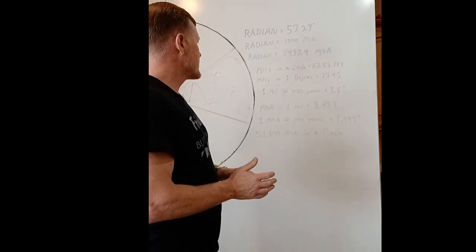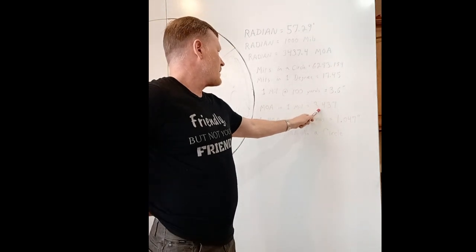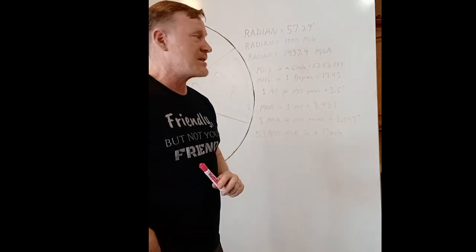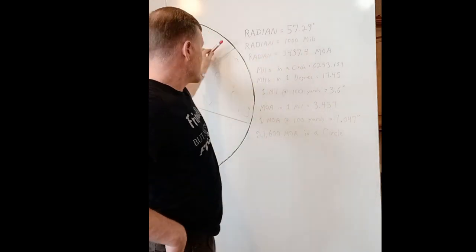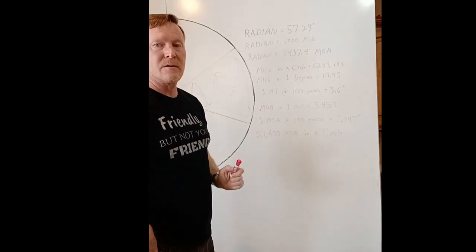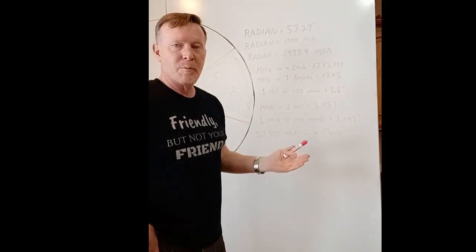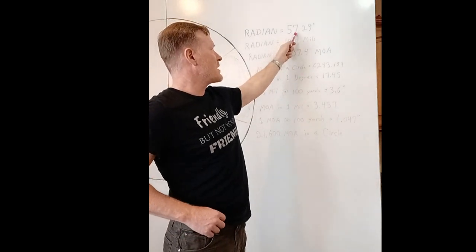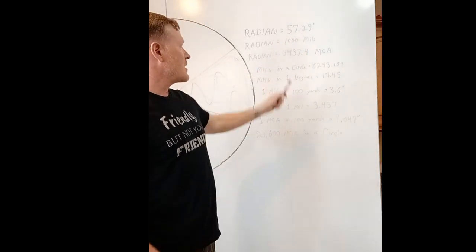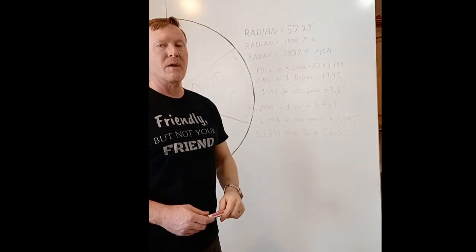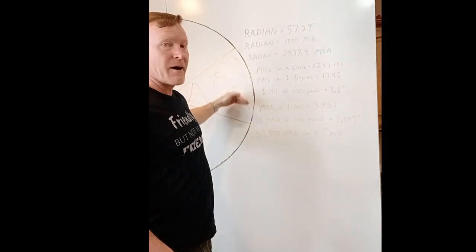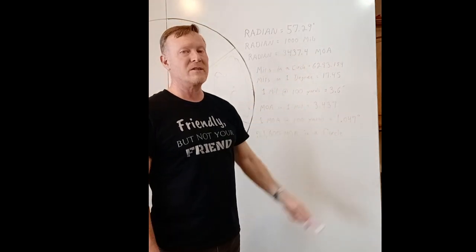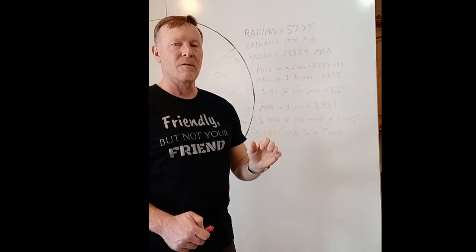Another thing that we can prove is that there's only 3.437 minutes of angle in a mil and not 3.6 like some people insist. So we know that a radian is 57.29 degrees. So you can multiply, you can instantly determine how many minutes of angle that is by multiplying by 60. We know there's 60 minutes in each degree. So 57.29 times 60 is going to be 3,437.4. So if you divide that by 1,000, right, because there's 1,000 mils in here, divide that by 1,000, you're going to get, just move the decimal point three places, you're going to get 3.437. 3.437 minutes of angle in one mil.